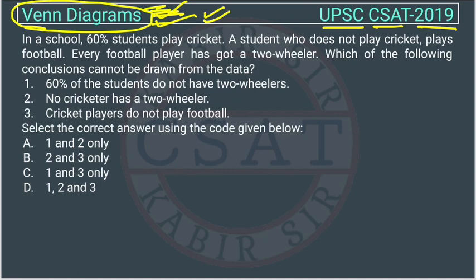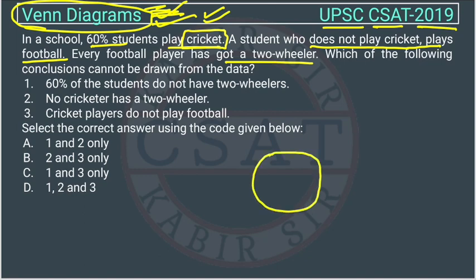In a school, 60% of students play cricket. A student who does not play cricket plays football — meaning everybody in the school is playing either cricket or football. Every football player has a two-wheeler. Now we will draw the Venn diagram representing cricket — this circle represents cricket, so this is 60%. They have given information about football players, and we have to find which of the following conclusions cannot be drawn.